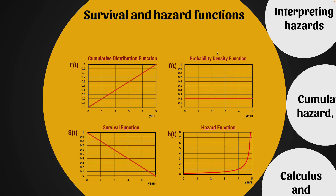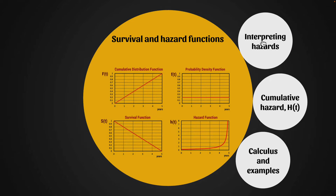The first thing we'll do is get introduced to four distinct functions. The first two you might have seen if you've looked at probability distribution functions before — the cumulative distribution function and the probability density function. Then we'll look at survival and hazard functions and see how they all interrelate. After that, we'll learn how to interpret the hazard function, learn about the cumulative hazard function, and finally look at the calculus behind the scenes with some real-world survival and hazard function examples.